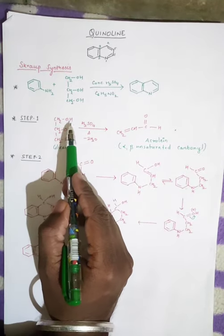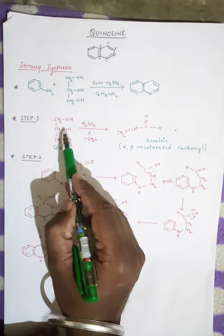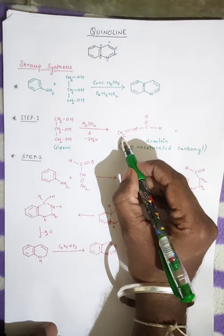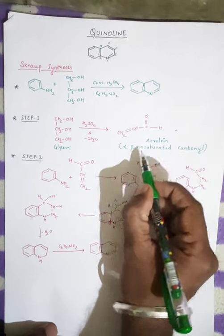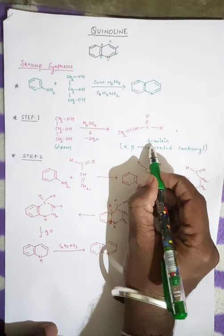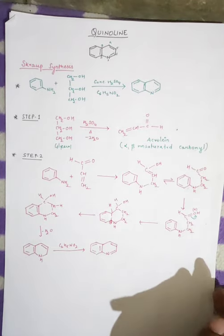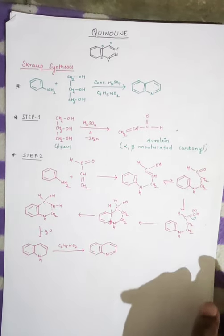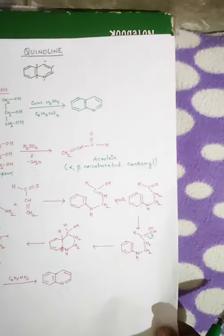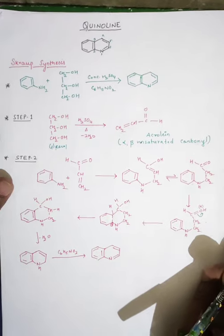Let's see the mechanism. When glycerol reacts with H₂SO₄, two molecules of water are removed. This results in the formation of an alpha-beta unsaturated carbonyl compound known as acrolein. So in step one, acrolein is formed from glycerol.